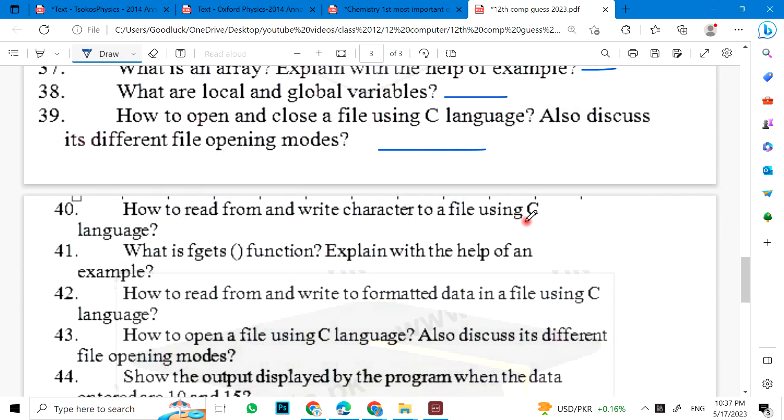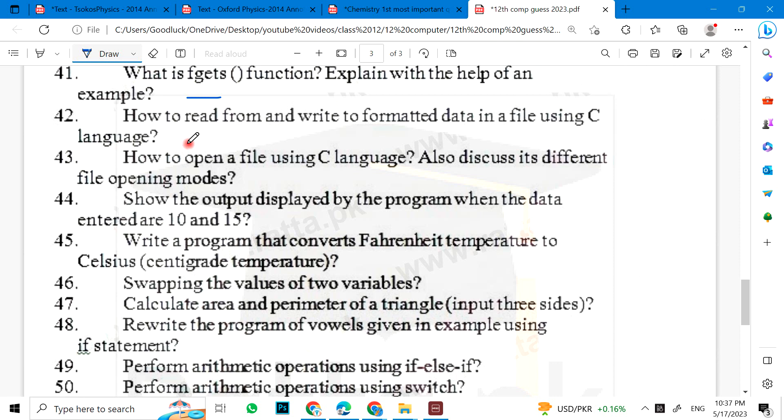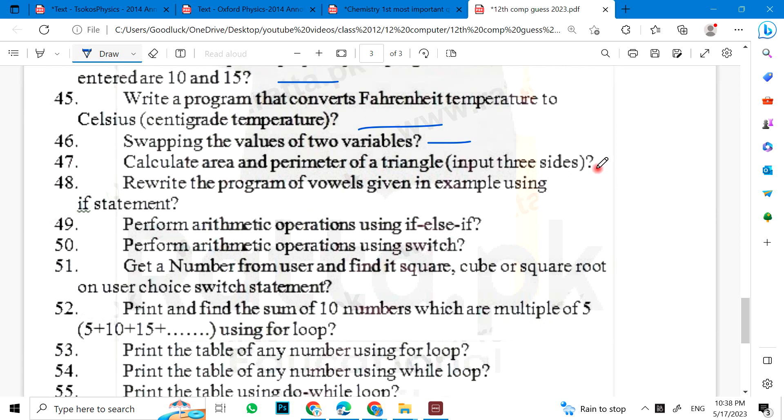How to read from and write character to file using C language. What is F gets function. 27. How to read from and write to formatted data. How to open a file using C language. 28. Swapping the values of two variables. Calculate area and perimeter. 29. Rewrite the program of vowels given in example using if statement.